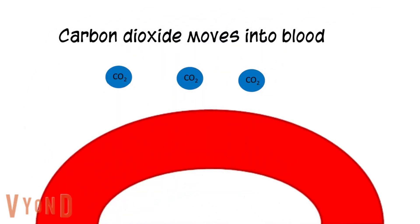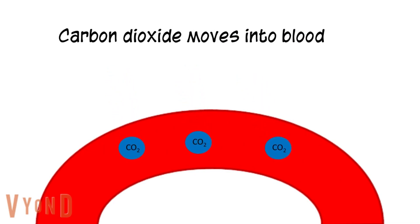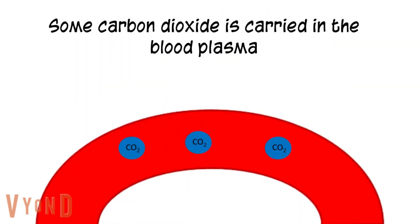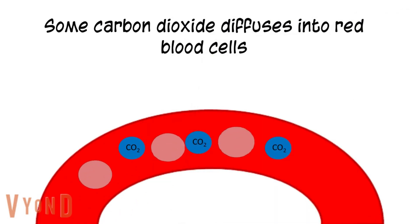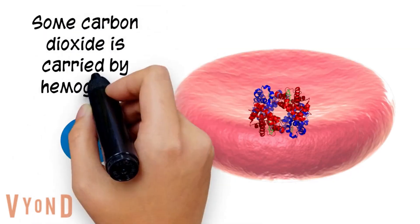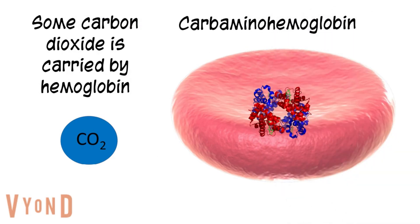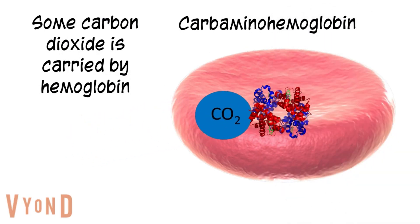Carbon dioxide diffuses into the blood. A small amount of carbon dioxide is carried in the blood plasma. A little more is carried in the red blood cell by hemoglobin. Carbon dioxide diffuses into the red blood cell where it can attach to hemoglobin, forming carbaminohemoglobin.